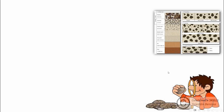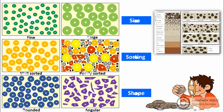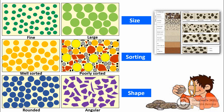Texture is the main parameter used by geologists to classify rocks. Rock texture is represented by size, shape, and sorting of the grains, and can be described in terms of grain size as fine or coarse.